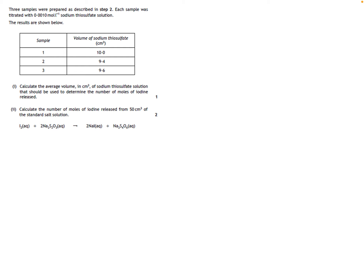We're going to work through some examples to get comfortable with them. The first one asks you to calculate the average volume. You know it's the two results that are concordant — that means within 0.2. We cannot use 10 because it must be a rough titer. The average volume is 9.5 cm³, from 9.4 plus 9.6 divided by 2.